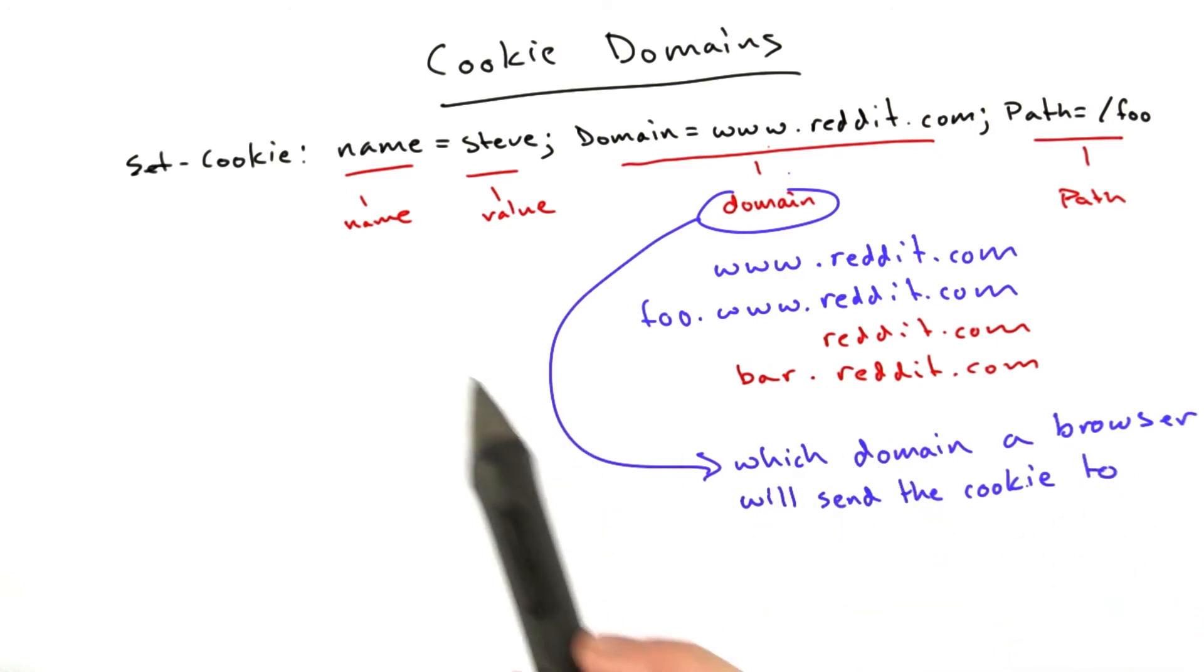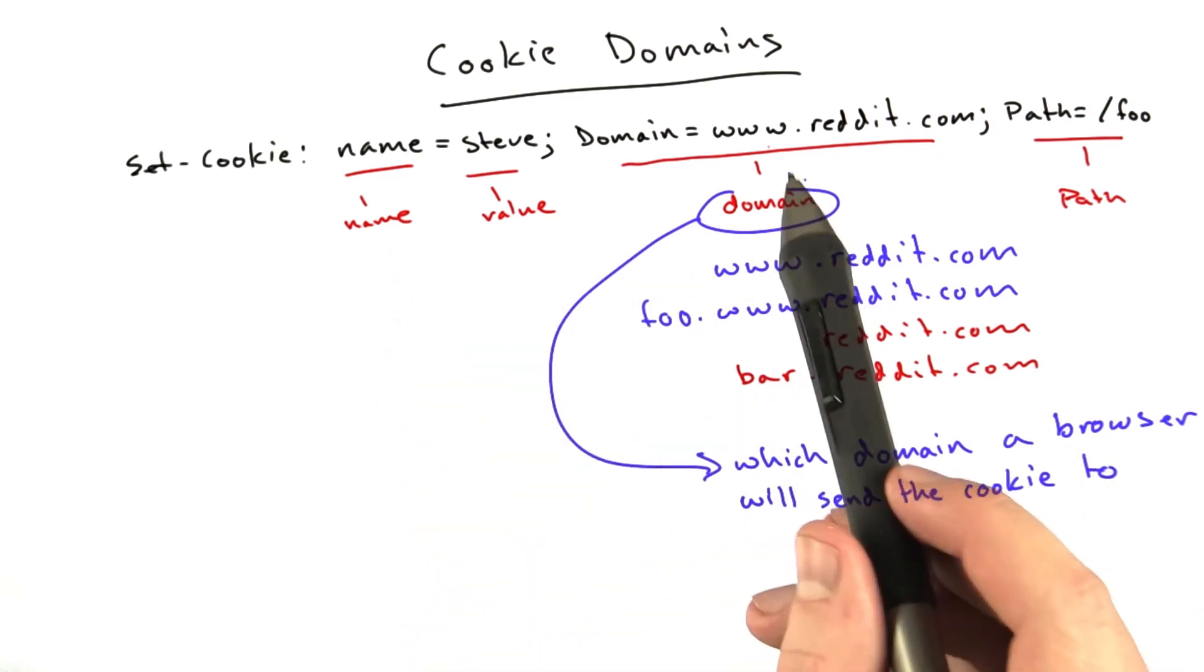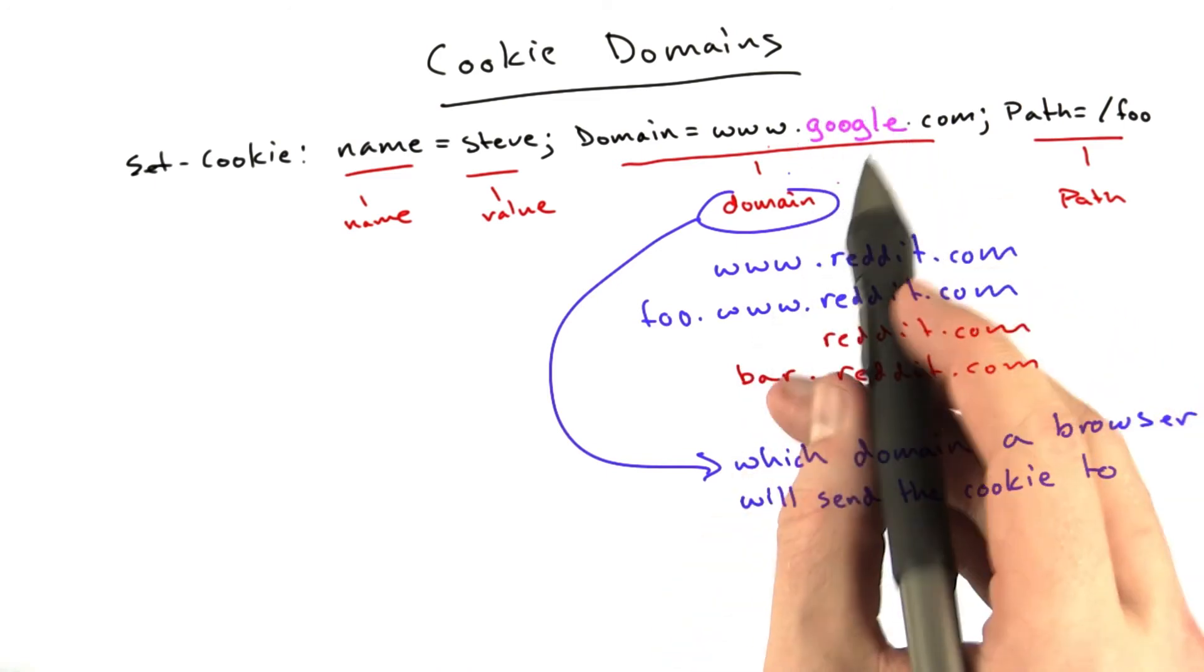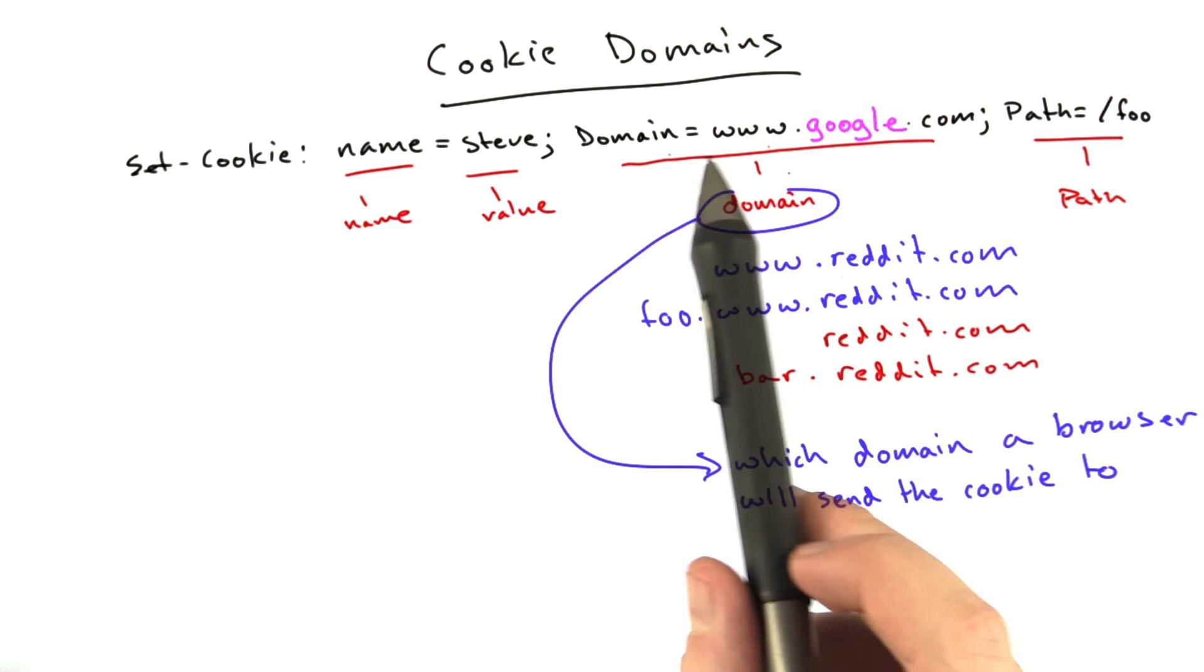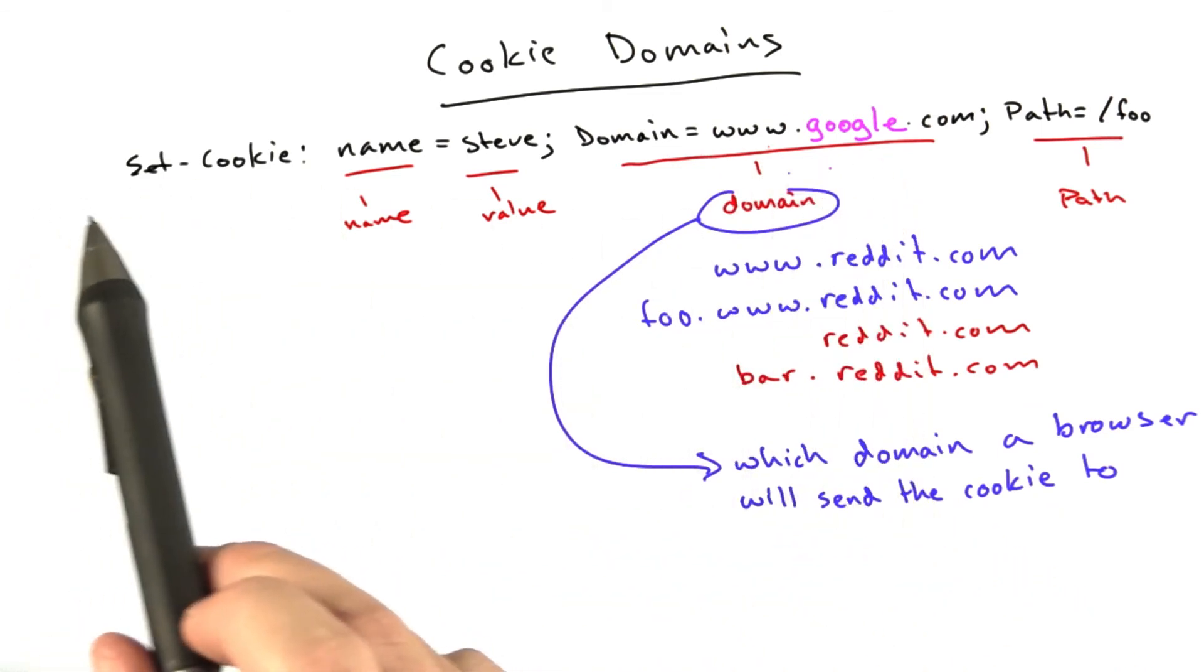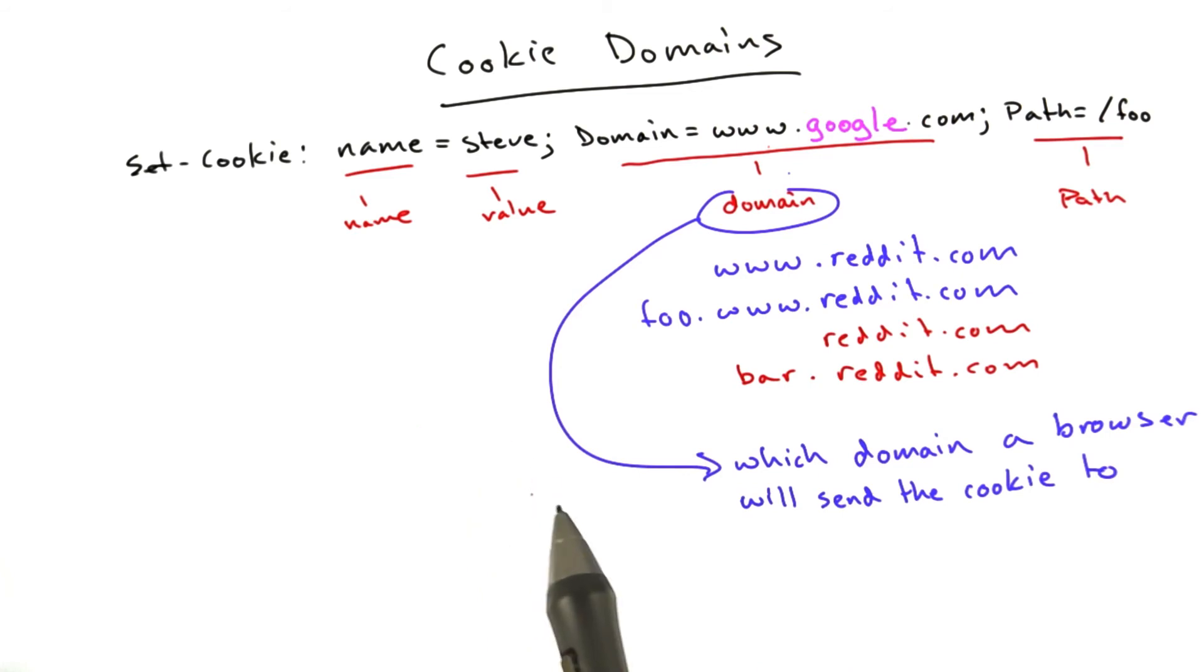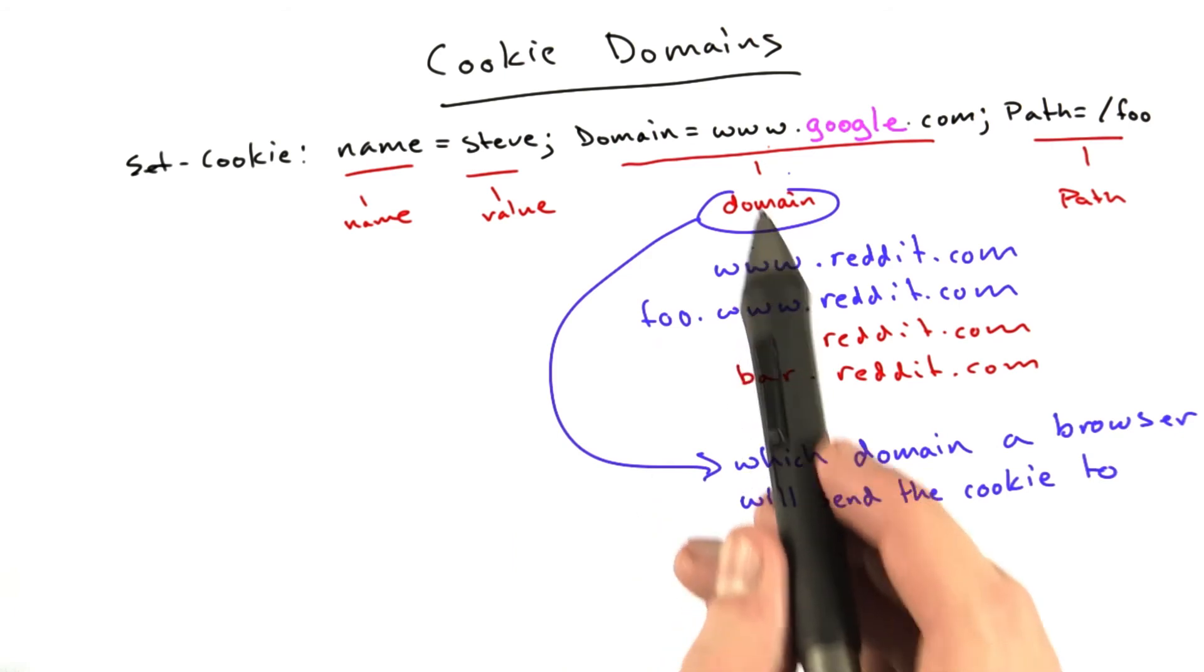What about, can I have a web server at reddit.com that sets a cookie for google.com? The answer is no. Similar to how the domain parameter restricts which domains a browser will send a cookie to, the domain who's serving their request, basically the domain of the web server, of the web page, you may only set a cookie to that domain or higher.